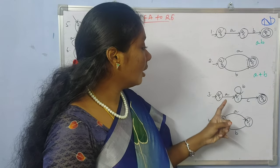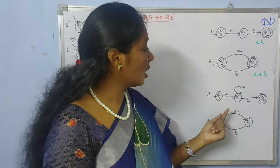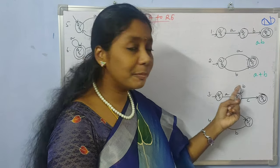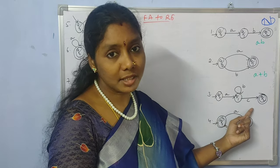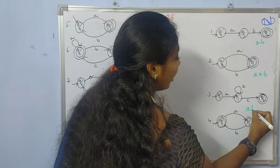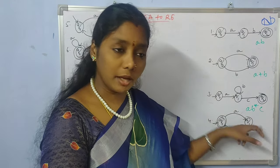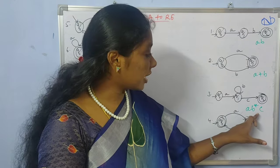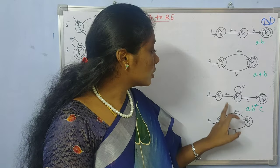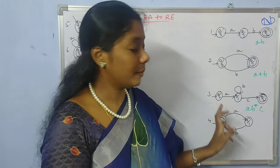Coming to the third example. Here, how can I reach the final state from the initial state? With A, and by taking some closure of B, and after that I have C. So here the regular expression is AB*C. I can take B or I may not take B; if I consider B, I can take it any number of times. So AB*C is the regular expression for this example.